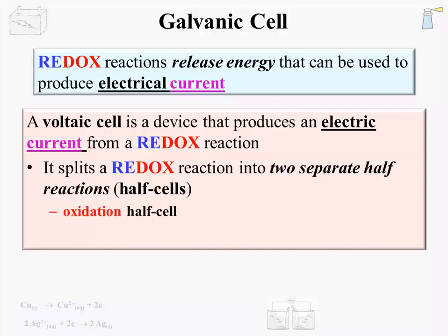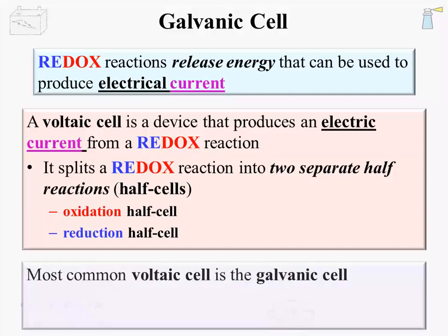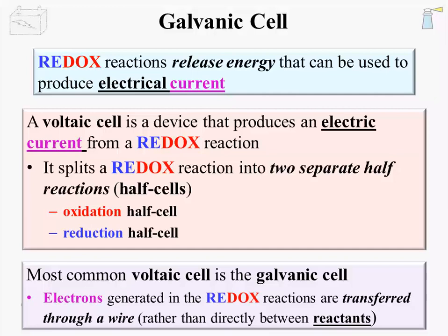There is an oxidation half-cell and a reduction half-cell. The most common voltaic cell is the galvanic cell, and we will limit our discussion to galvanic cells. Since the half-reactions are separated from each other, electrons generated in the redox reaction are transferred through a connecting wire. With a redox reaction in a single container — no half-cells — the electrons would directly transfer between reactants. So the separation of half-cells is what makes a redox reaction a voltaic cell. A diagram will probably help clarify the matter.